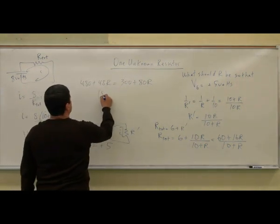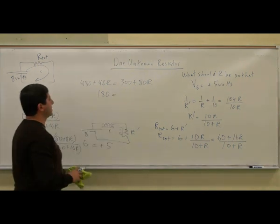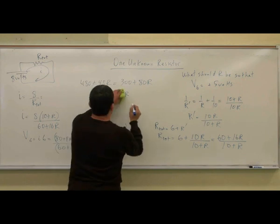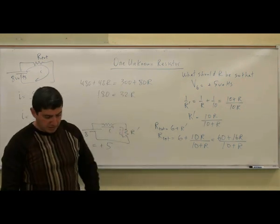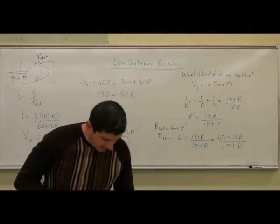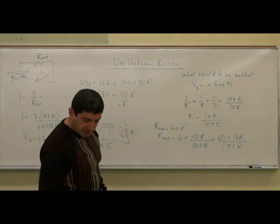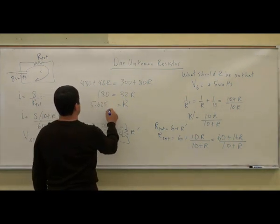So 480 minus 300, 180 is equal to 80 minus 48 is going to be 32, 32R, okay? And then the final answer comes out to be 5.625 ohms.